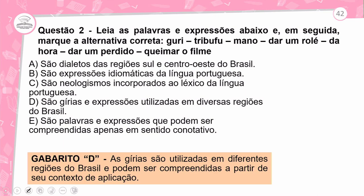Gabarito letra D: são gírias utilizadas em diferentes regiões do Brasil e podem ser compreendidas a partir do seu contexto de aplicação. 'Guri' está relacionado a menina, garota, criança; 'tribufu', mulher feia; 'mano', parceiro, amigo; 'dá um rolé', dar uma voltinha, sair; 'da hora', bacana; 'dá um pedido', pedir permissão; 'queimar o filme', estragar o esquema, falar mal da pessoa.